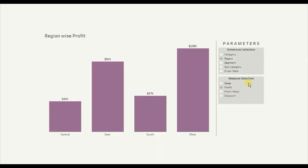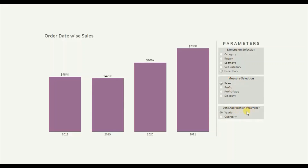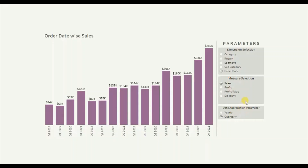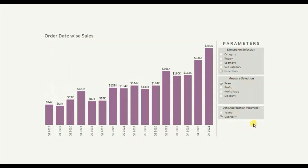Currently you can see only two parameters in the view. The requirement is that when I click on order date, we want to give the user functionality to change the date aggregation to view this bar chart either yearly or quarterly. So suppose we want to see quarterly sales — we can click on sales from the measure selection parameter and from the date aggregation parameter we can select quarterly. You will observe that when I click on another dimension, such as segment, this date aggregation parameter is now hidden. The date aggregation parameter will appear in the view only when we select order date from the dimension selection parameter. Now let's jump to Tableau and see how to implement this.